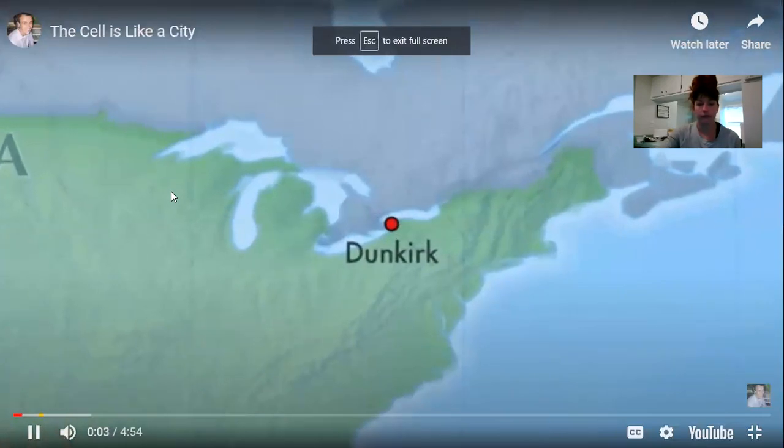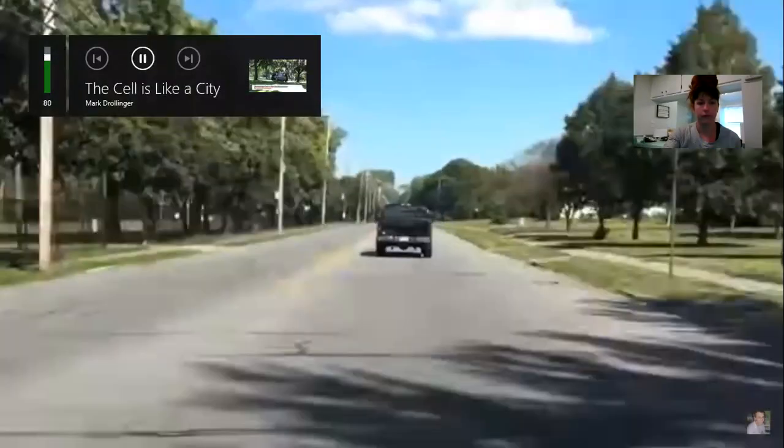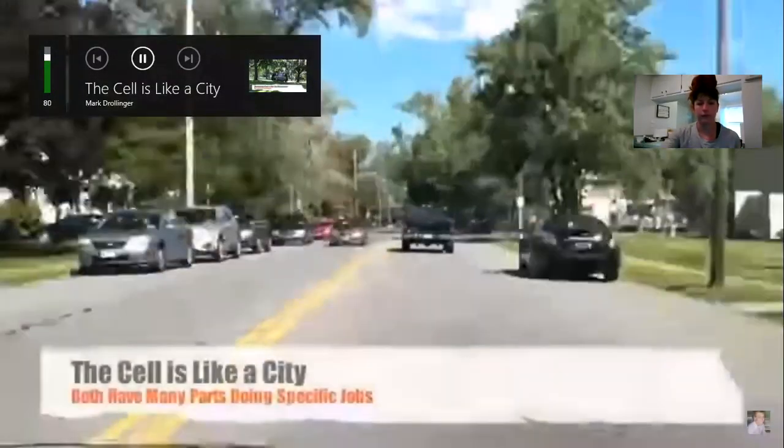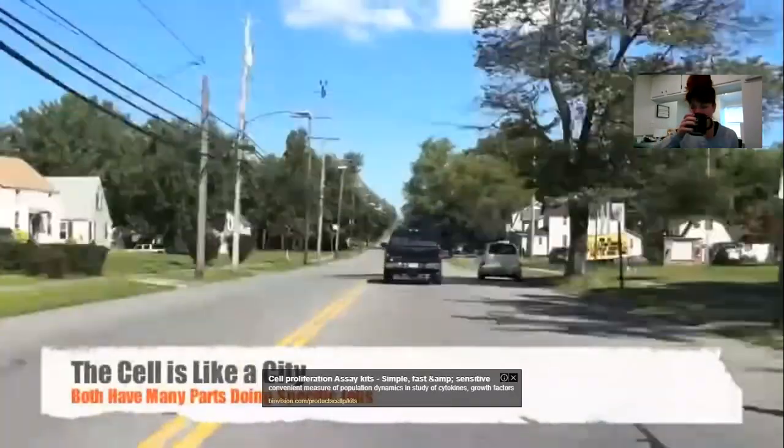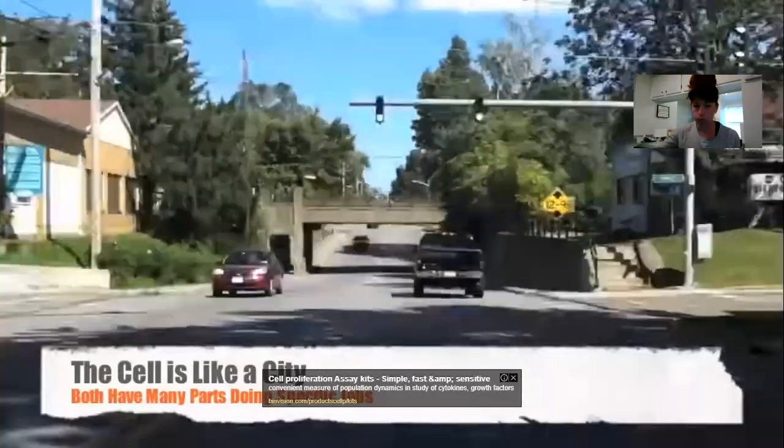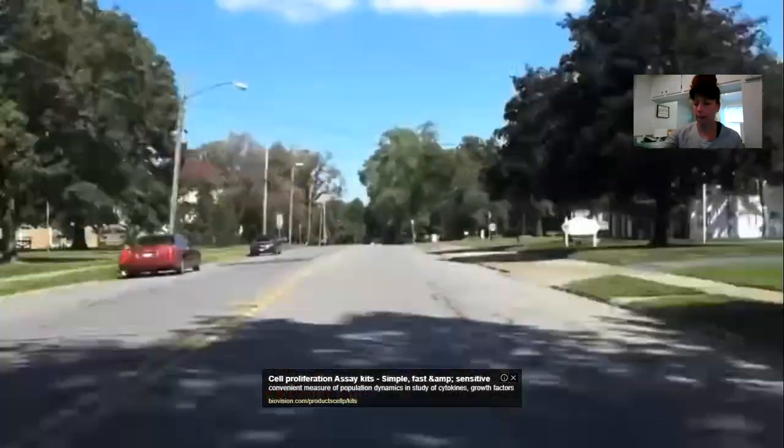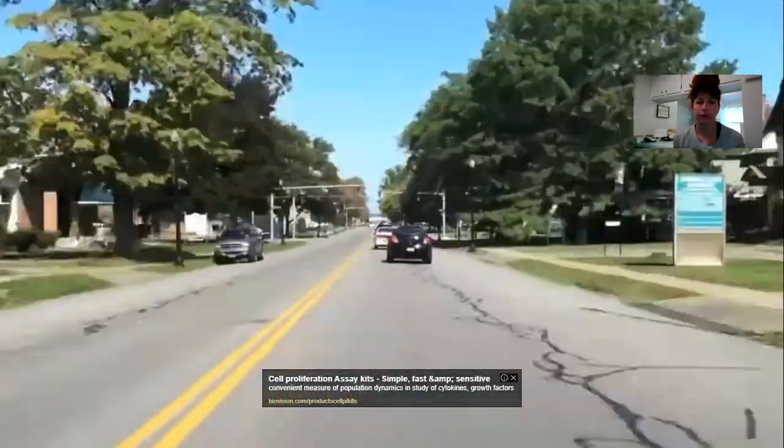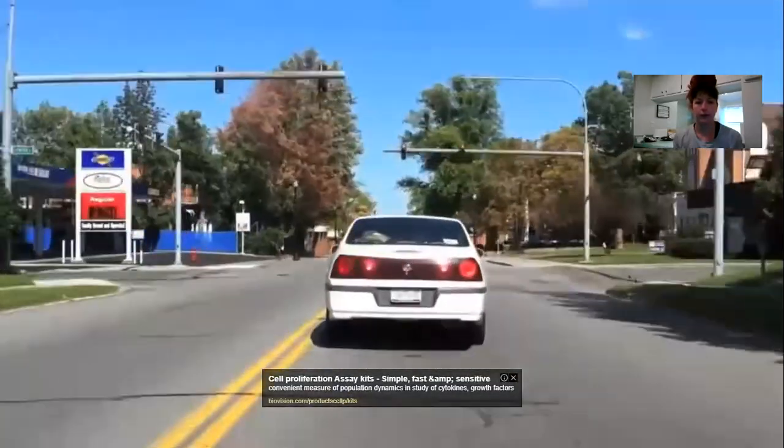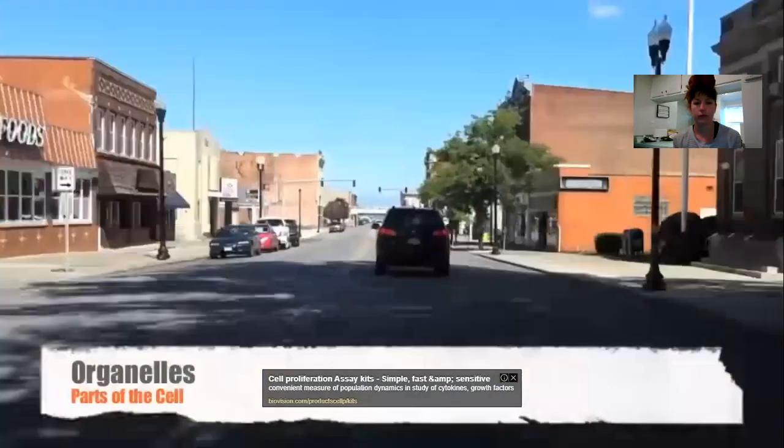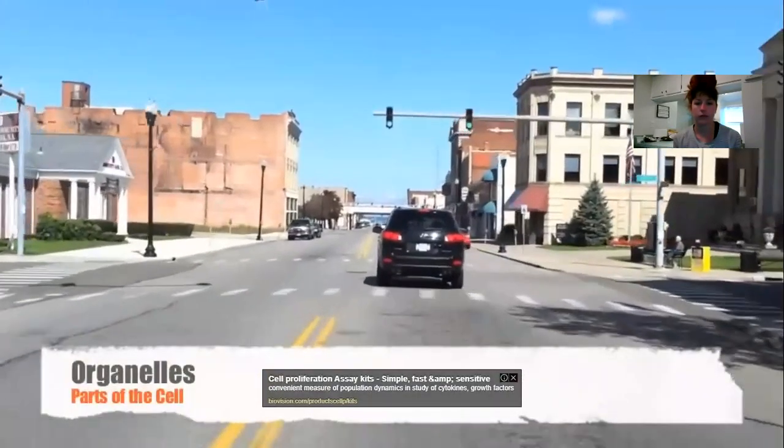The city of Dunkirk, full of many people and buildings all doing their jobs to make the city run smoothly. Cells are like a city because cells are made up of many different parts each doing a specific job. The parts of the cell are called organelles.